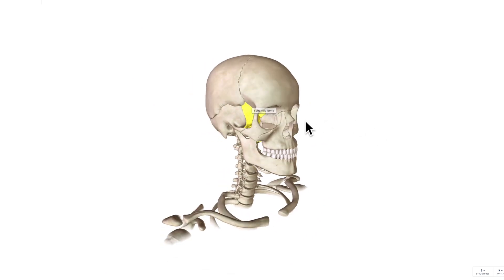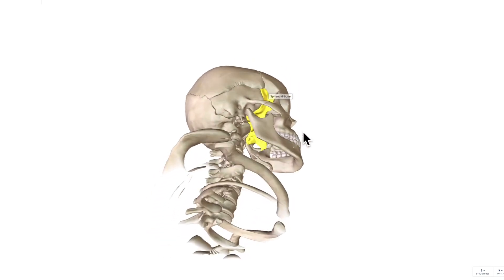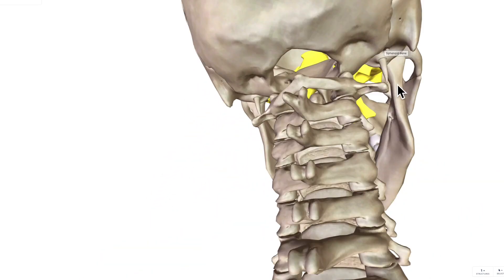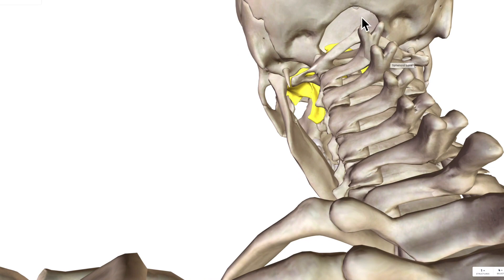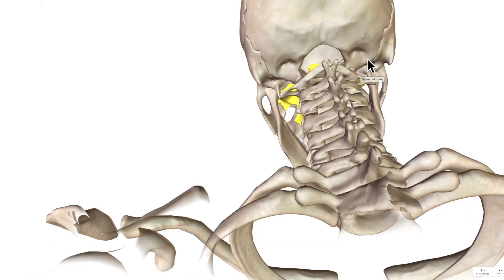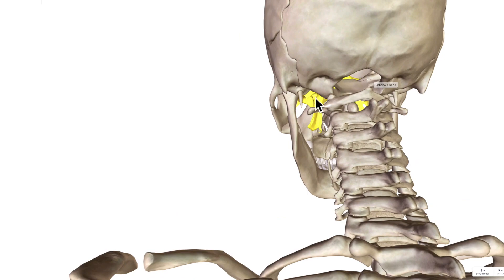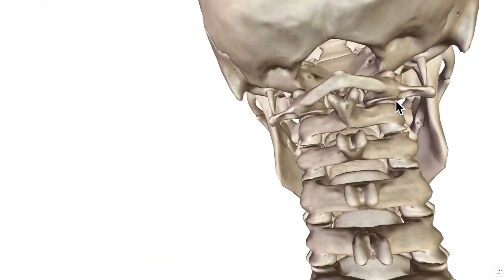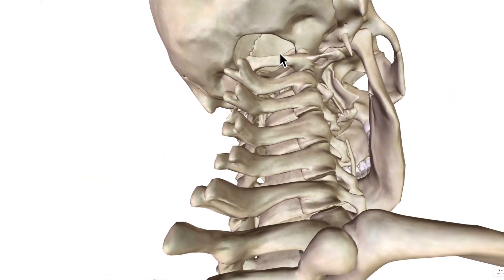If we look more inferiorly, we will start to appreciate that there is this circular structure here. Does anyone know the name of that circular structure? Let me click off the sphenoid bone. This circular structure here is going to be called your foramen magnum.